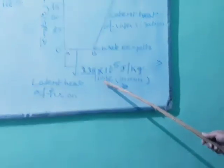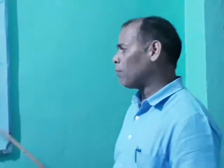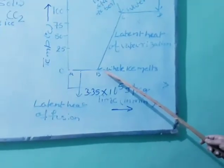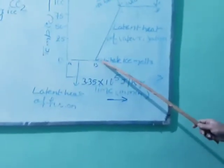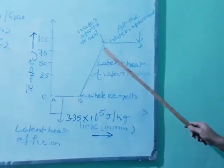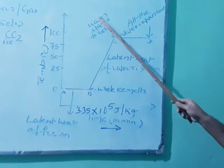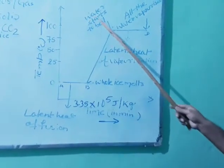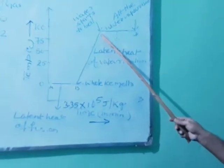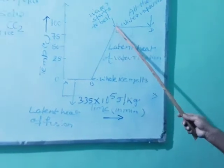This value is called the latent heat of fusion of ice. It means to convert 1 kg of ice into 1 kg of water, this much heat energy is required. Now, all the ice has already melted and is in liquid form, so slowly the temperature increases on the thermometer. When the thermometer temperature reaches 100 degrees Celsius, water starts to boil. This point is called the boiling point. Once again, if you are continuously heating, the temperature remains constant.